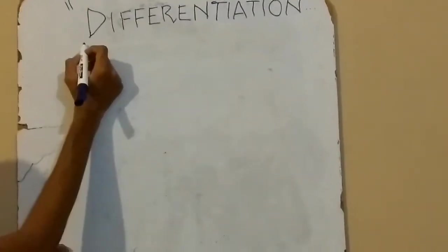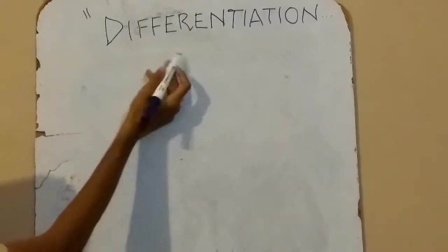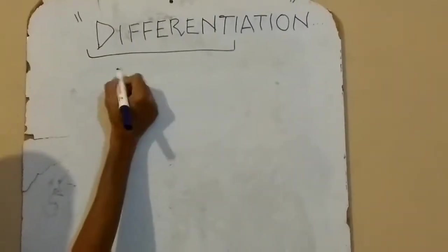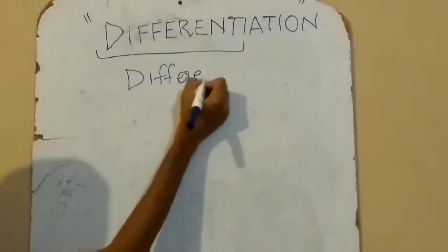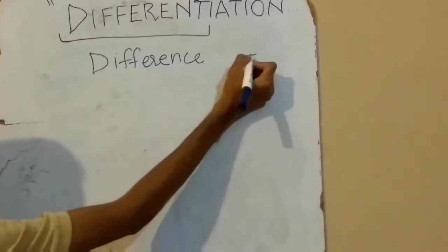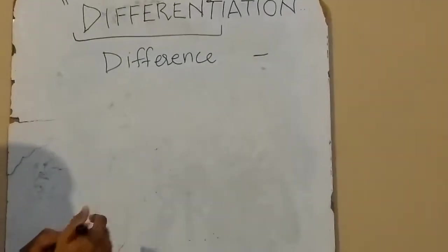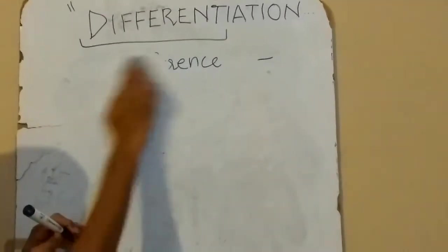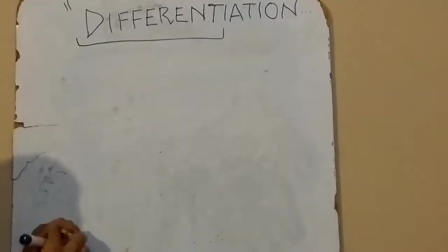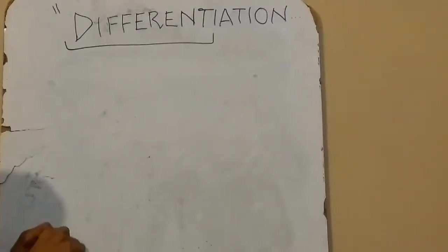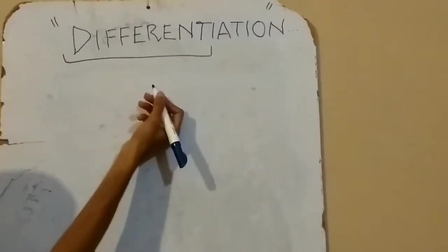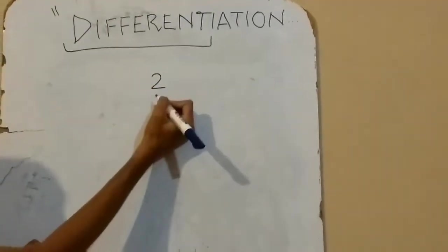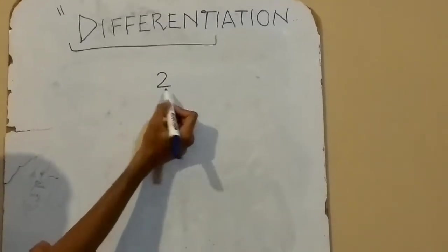Differentiation is one of the most commonly seen topics in mathematics. It comes from the word 'difference', which means subtraction — one of the four mathematical operators. Differentiation is a method applied on equations or expressions. For instance, if we have the constant 2 and want to differentiate it, the answer will be 0.